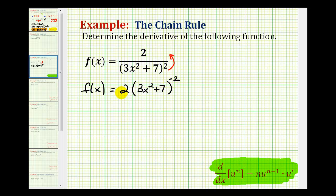So now we have two times a composite function, and once we know we have a composite function, we want to let the inner function equal u. So here, u is going to be equal to three x squared plus seven. So now we can rewrite the given function in terms of u. We would have two u to the power of negative two.